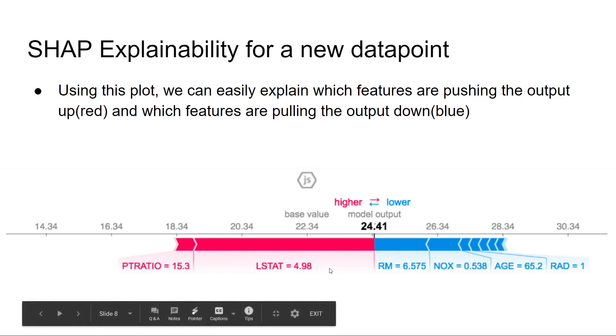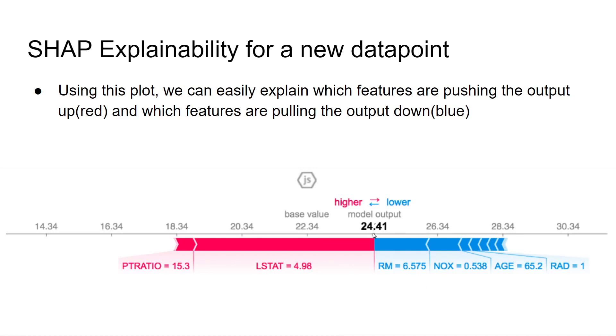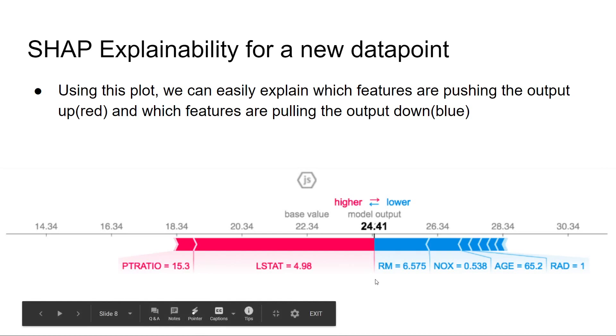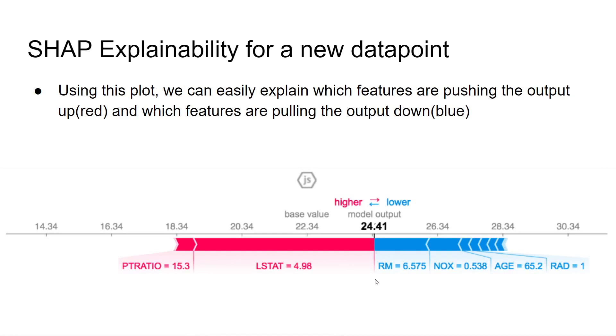What we can understand from this plot is these are the features that are pushing the output higher in red, and these are the features that are pushing the output lower in blue. Using this, we are able to predict the model output as 24.41, and for a new data point, we can easily understand which drivers are pushing higher and which drivers are pulling lower.